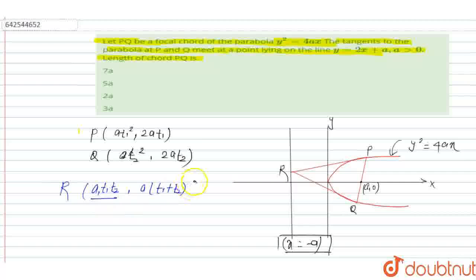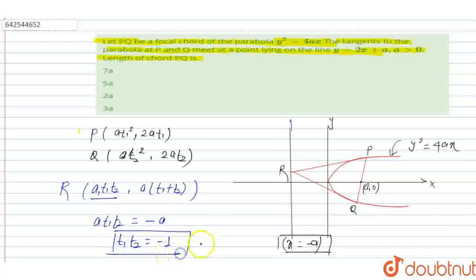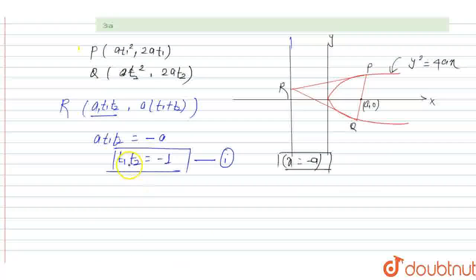The x-coordinate of R is at1t2. Since point R also lies on the directrix, and the equation of the directrix is x = -a, then at1t2 = -a, so t1·t2 = -1. This is condition number 1.